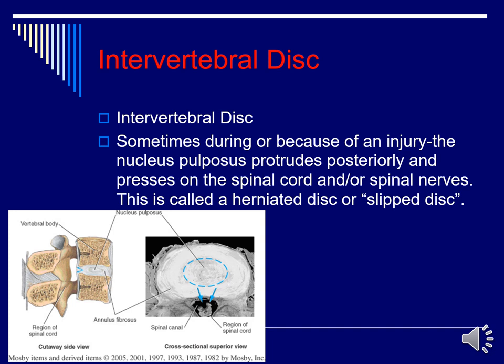As a reminder, intervertebral discs sit between each vertebra and act as shock absorbers. A herniated disc is when the nucleus pulposus — the center of the disc — tries to protrude out and pushes on the annulus fibrosus, the outer stronger layer. This can push into the spinal canal, impinging the spinal cord and potentially causing numbness, tingling sensations, or pain in the upper or lower extremities.